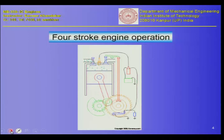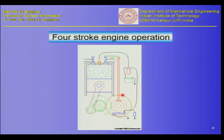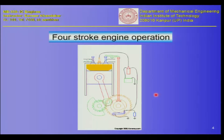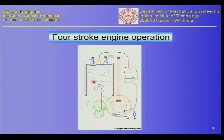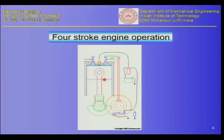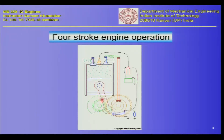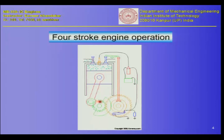Here is a video of a four-stroke engine. Let us try to understand each and every component. You will recall there is a piston — the piston is here, again having reciprocatory motion. There is also a connecting rod, and there is a crankshaft which is rotating.